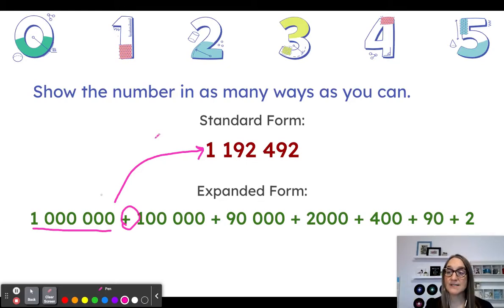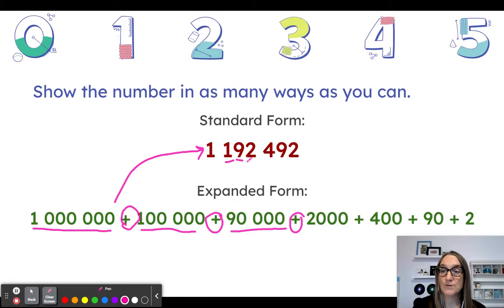So we have 1 million plus. And then again, our next highest value digit was that one in the 100,000s place. So we have 100,000 plus, we move to our next digit, a nine in the 10,000s place. 9 times 10 makes 90. We have 90,000 plus a two in the 1000s place. 2000 plus can't forget that plus. And then we have our last bit 400 plus 90 plus two.